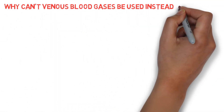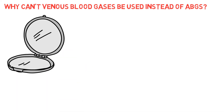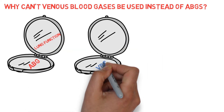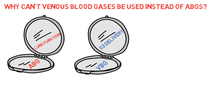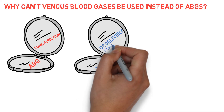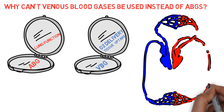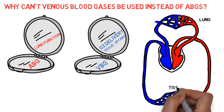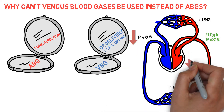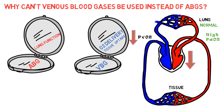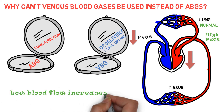Why can venous blood gas be used instead of ABGs? Arterial blood gases reflect lung function; venous blood gases reflect the adequacy of tissue oxygenation and tissue carbon dioxide clearance. A low mixed venous PO2 less than 35 mmHg reflects tissue hypoxia and may be the result of decreased oxygen delivery or increased tissue oxygen uptake. Venous PO2 is typically much lower than arterial PO2, and there is often little relationship between the two. Normally the mixed venous PCO2 is only slightly greater than the arterial PCO2; however, venous PCO2 depends on blood flow, and in cases of low blood flow such as cardiac arrest, the mixed venous PCO2 may be high even though the arterial PCO2 is normal or decreased.